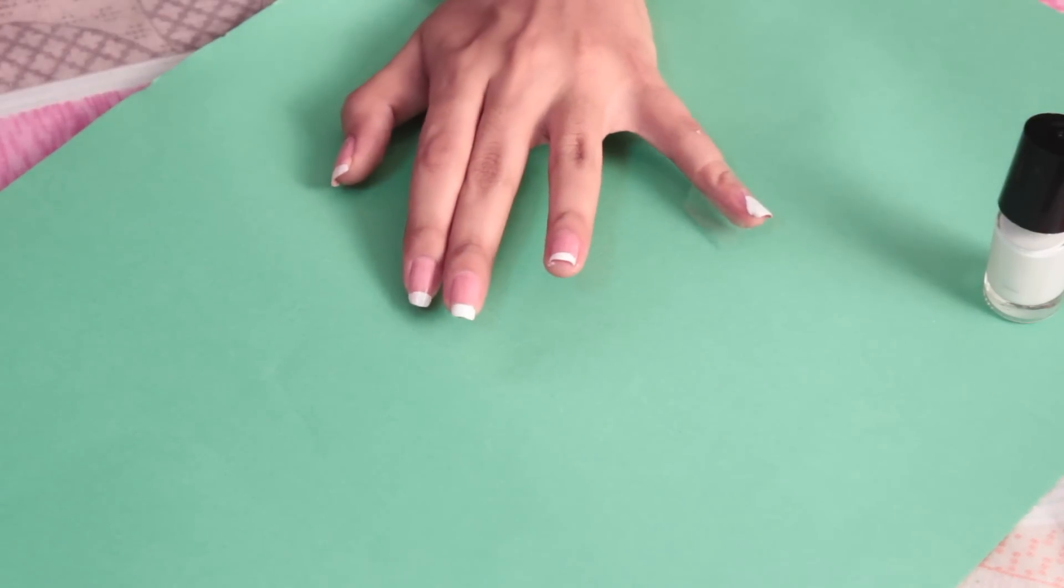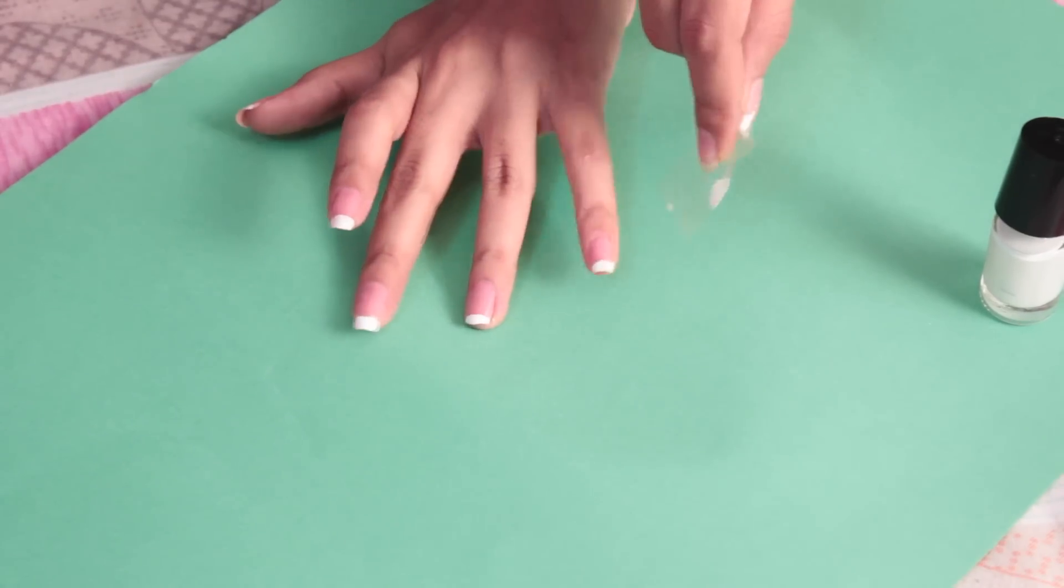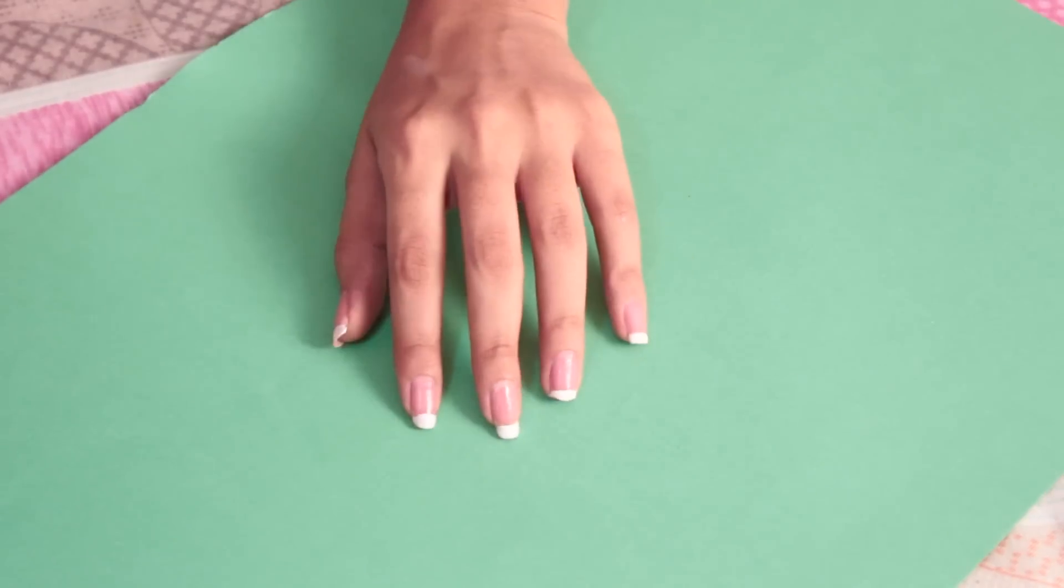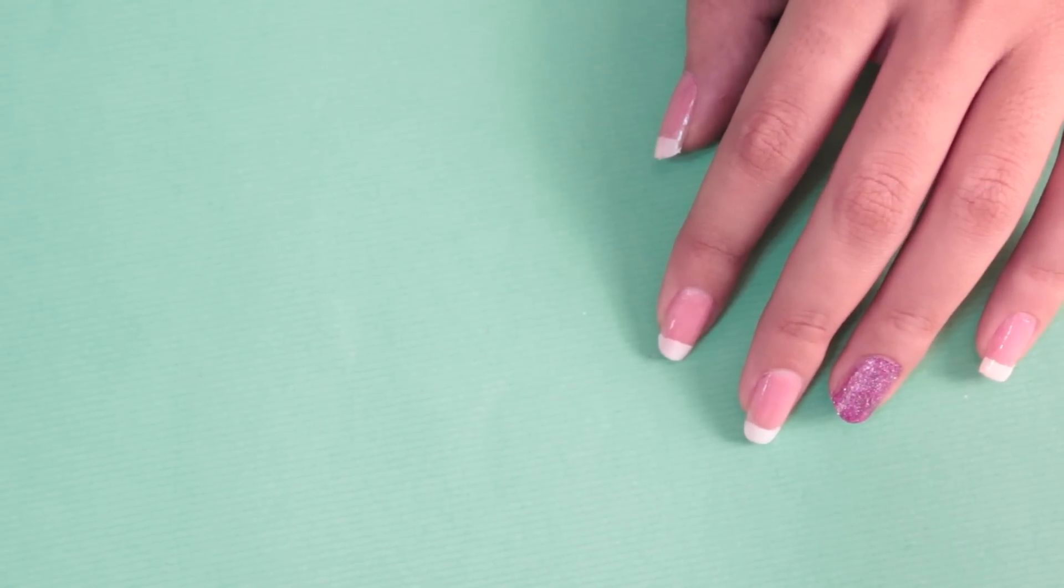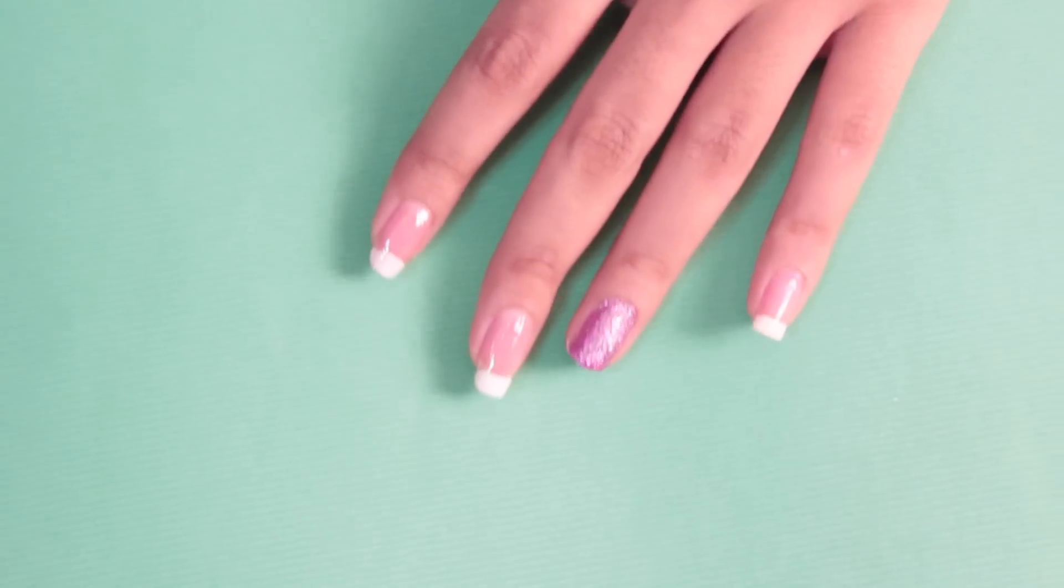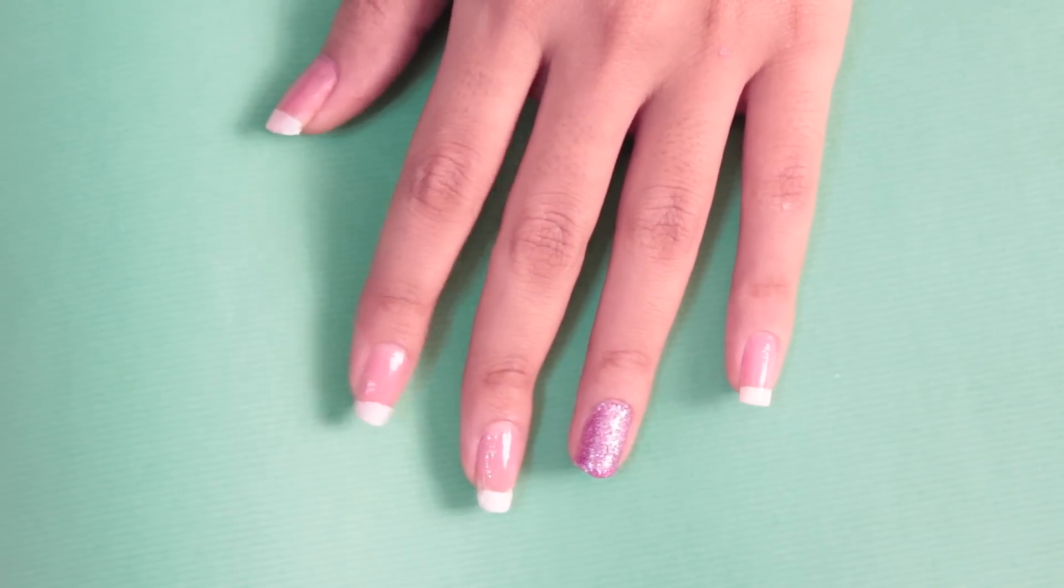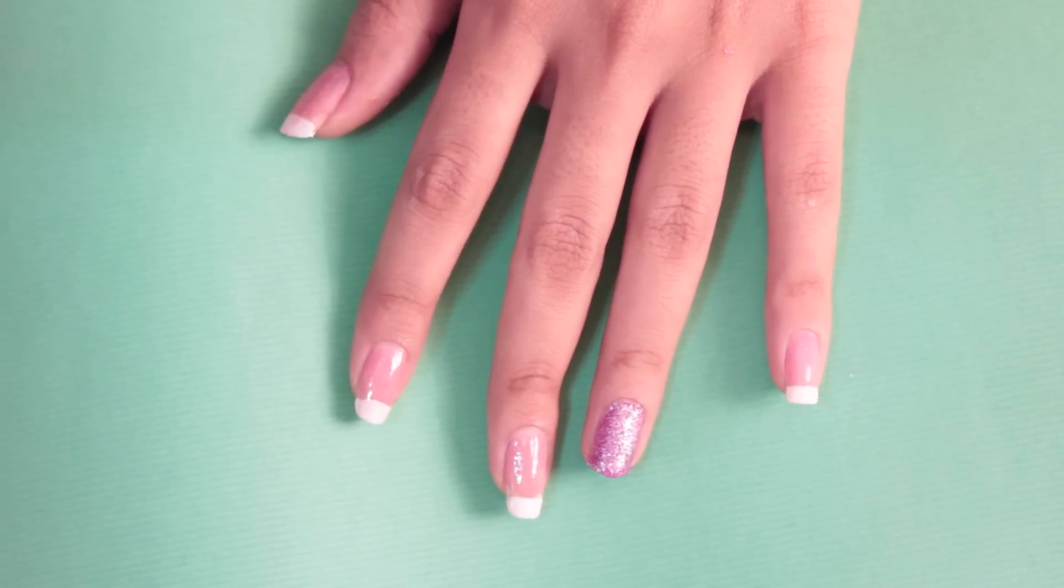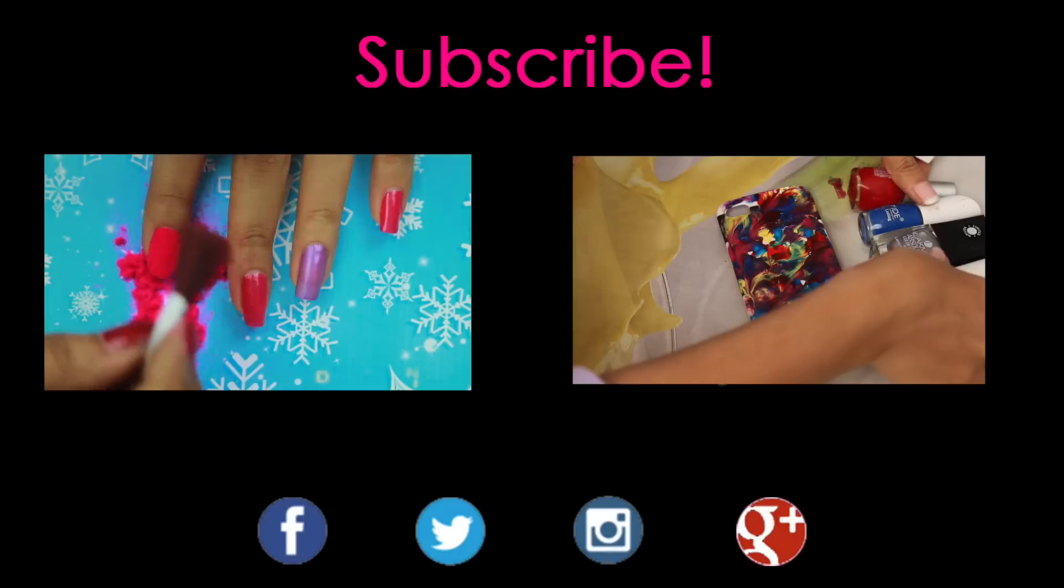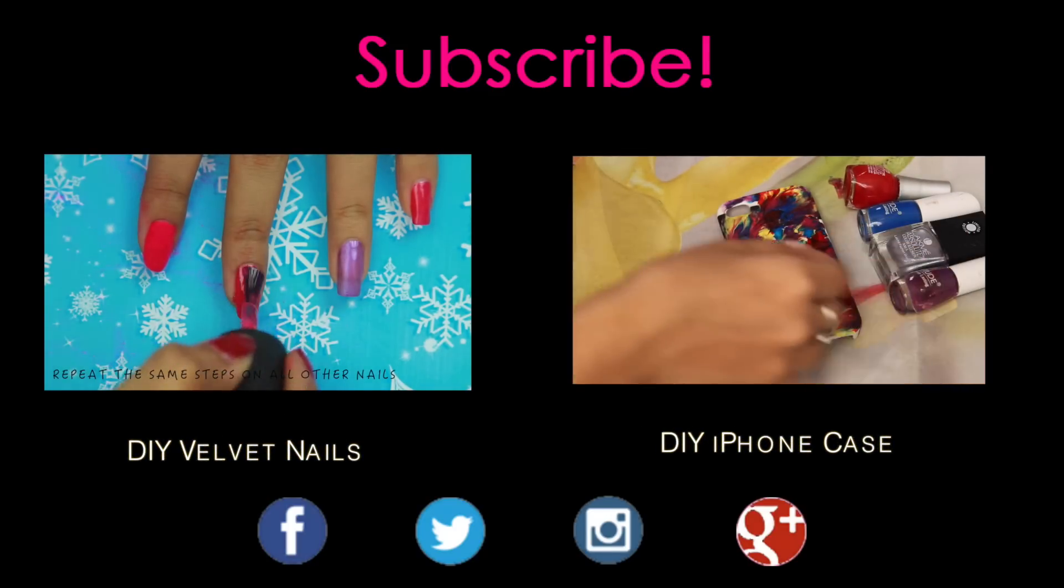To give it a slightly different look, I have taken a pink glitter nail polish and painted my accent nail, which is my ring finger, in a different color. I hope you guys enjoyed this video. If you did, make sure you hit the like button, subscribe, comment below and tell me how you found it. Don't forget to share your pictures with me on Twitter and Instagram. See you guys!